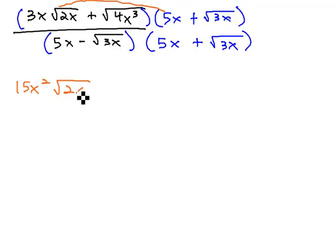Inside the radical is just the 2x. Then 3x root 2x times the square root of 3x, we get a positive 3x outside the radical. And inside the radicals, 2x times 3x is 6x squared.